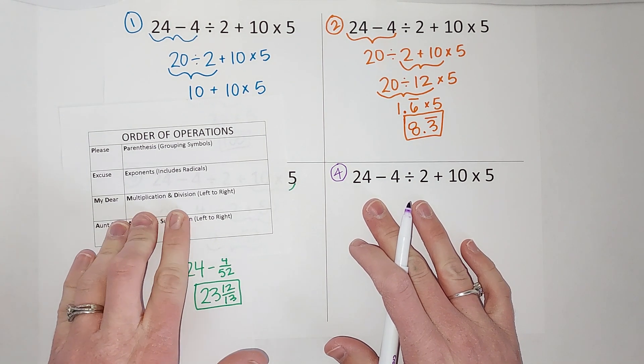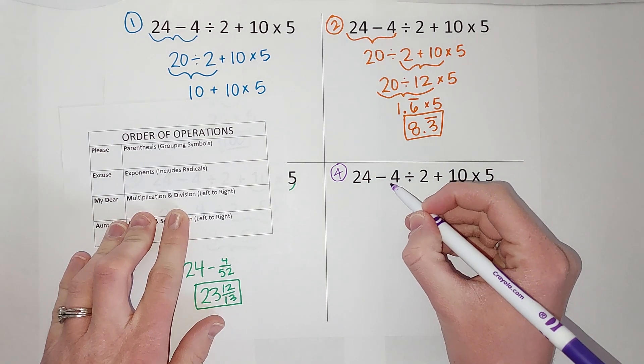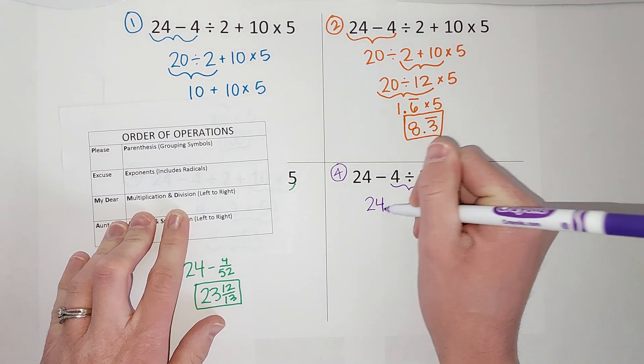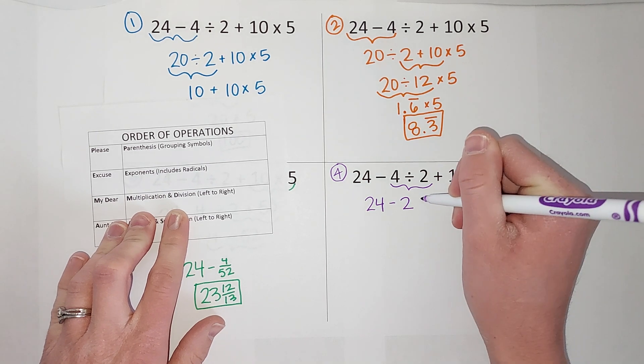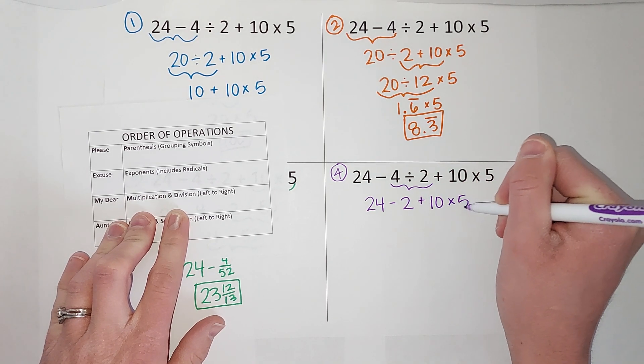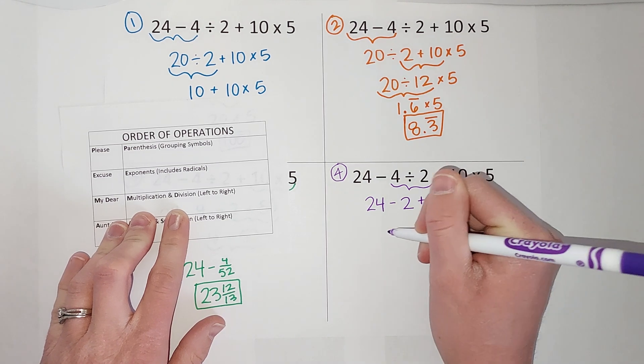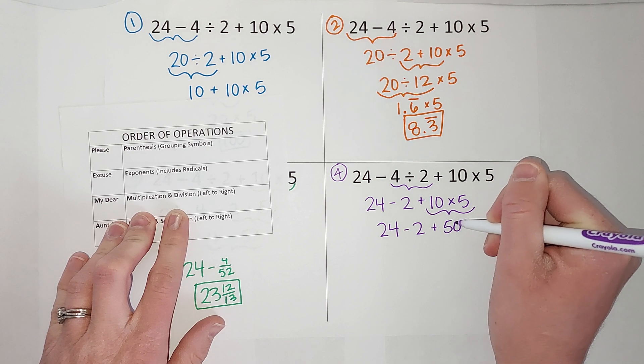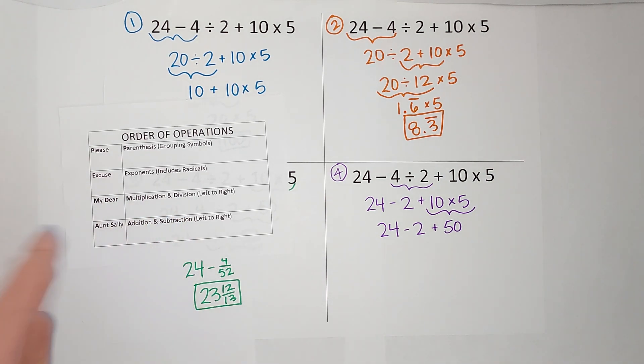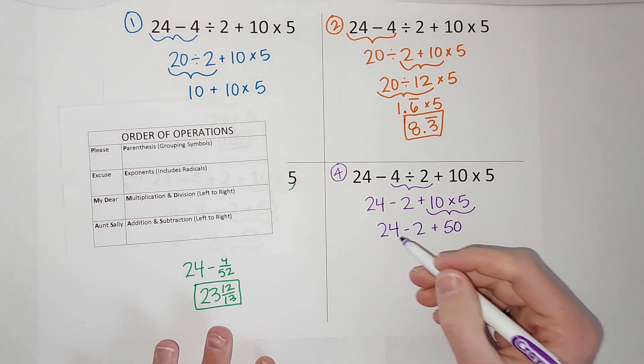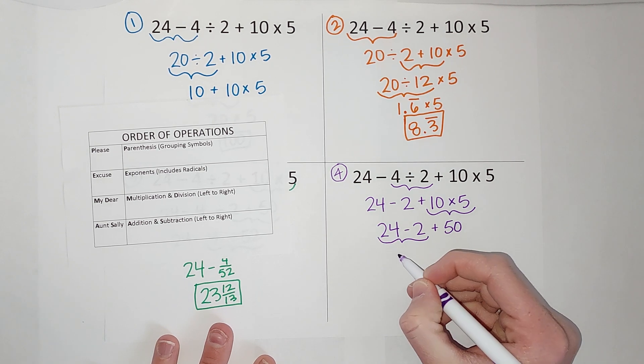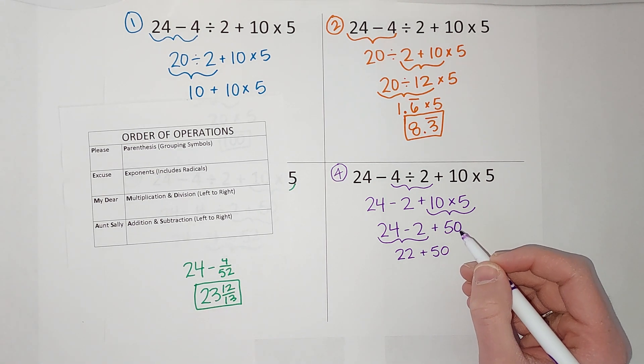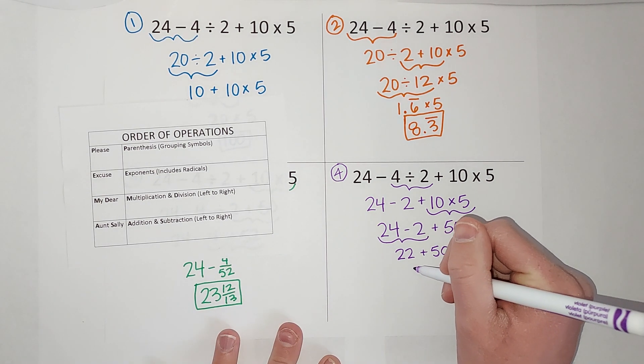He follows the order of operations. In this problem, we don't have any parentheses or exponents, so we start with multiplication and division, going left to right. This kid did the division first: 24 minus 2 plus 10 times 5. Then he did the multiplication: 24 minus 2 plus 50. Then we do addition and subtraction left to right: 24 minus 2 is 22, plus 50, which equals 72.